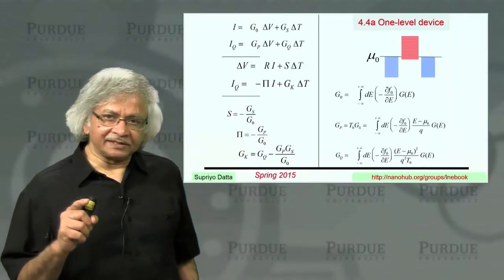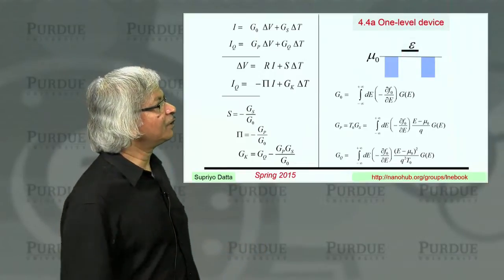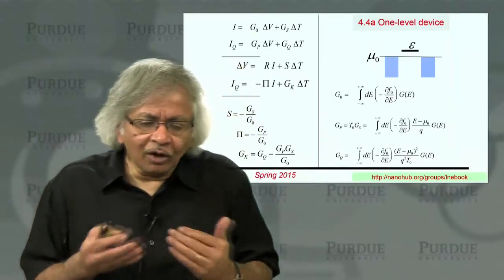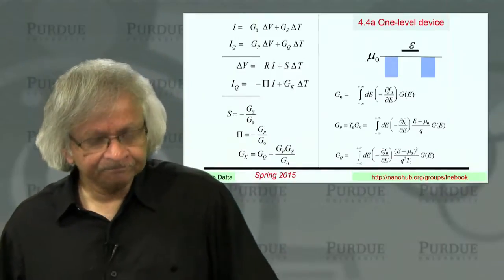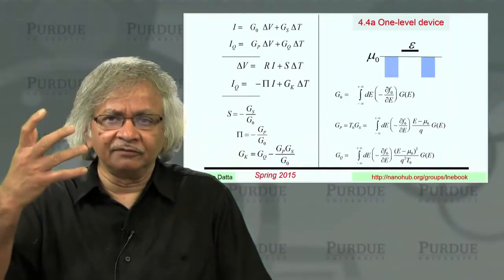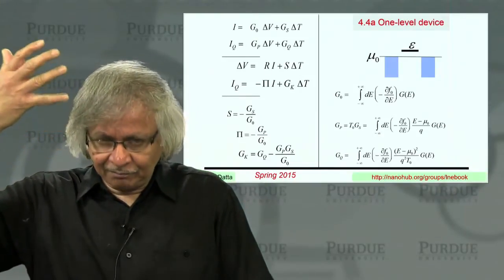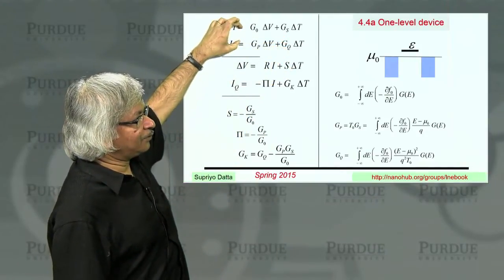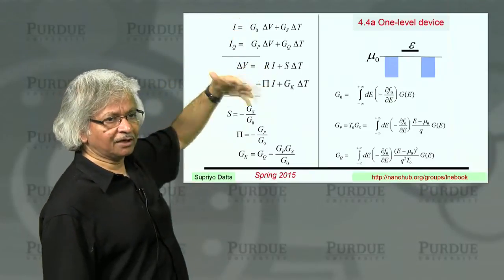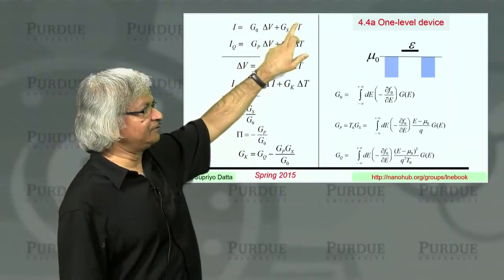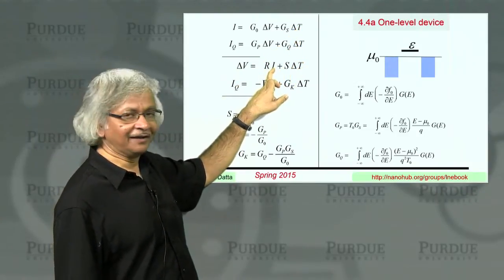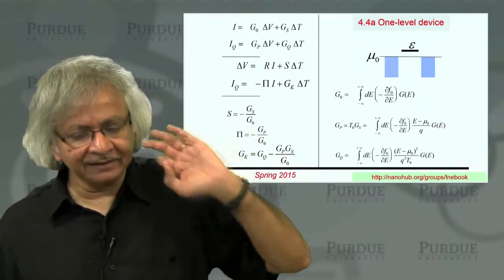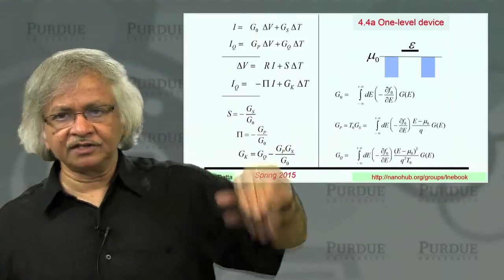This is all for a general case with a continuous distribution of levels. What we want to do in this lecture is talk about a special case where you just have one level. What I want to explain is that that gives you a lot of insight as to what really determines these thermoelectric coefficients. For this one level device, let's first see mathematically from our expressions what we get, and then we'll try to understand them physically.